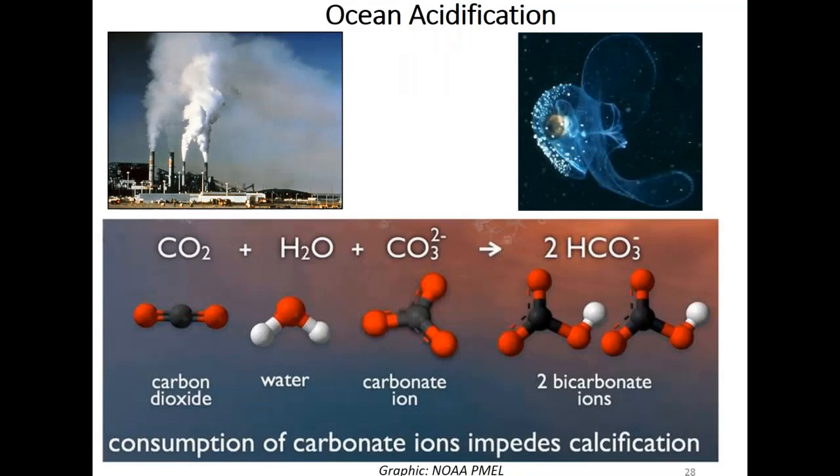Ocean acidification has been dubbed the evil twin of global warming. As we put more CO2 into the atmosphere, we see consumption of carbonate ions, and species that need calcification — like shelled species — have a harder time existing and surviving. That's true for shelled species and also for some non-shelled species, potentially including fish. Pteropods are sort of the poster child for quite visible effects of low pH or ocean acidification impacting their shell structure.